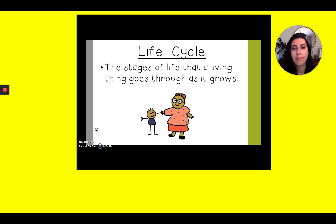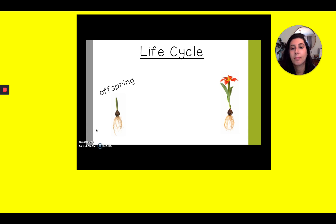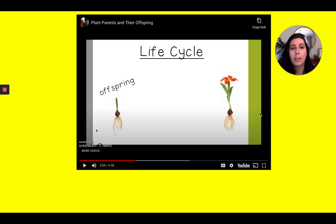Plants are the exact same way. I'm going to show you a plant life cycle. This little plant is the offspring, and then eventually it's going to grow all the way up to be the adult. Now, what do you notice about the offspring and the adult? They're totally different, right? But if I look really closely, I can kind of see some similarities, or ways they're the same. Do you notice any similarities between the offspring and the adult plant? Can you name some similarities — some ways that they're the same?